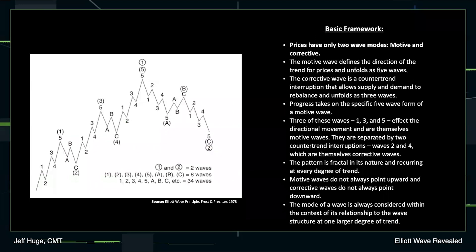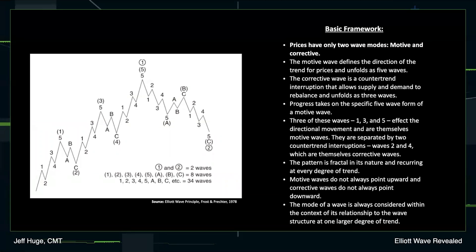To review the basic framework: prices have just two wave modes — Motive Wave and Corrective Wave form. The Motive Wave defines the direction of the trend for prices and unfolds as five waves. The Corrective Wave is a countertrend interruption that allows supply and demand to rebalance, and that always unfolds as three waves. Progress takes on a very specific five-wave form of the Motive Wave. Three of these waves — waves one, three, and five — affect the directional movement, and they themselves are Motive Waves at a lower degree of trend. They are separated by two countertrend interruptions, waves two and four, which themselves are also corrective waves at a lower degree of trend. The pattern is fractal in its nature and recurring at every degree of trend.